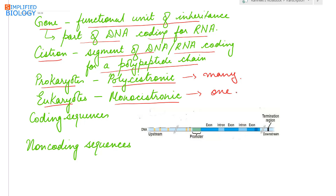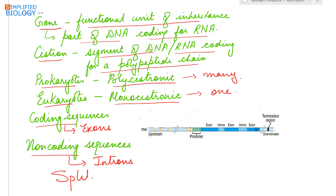In eukaryotes, the monocistronic structural gene has coding and non-coding sequences. The coding sequences are known as exons, while the non-coding sequences are known as introns. Such genes are known as split genes and they were discovered by Sharp.